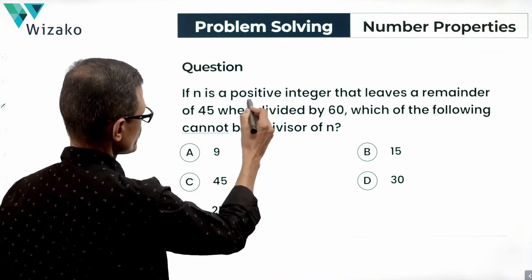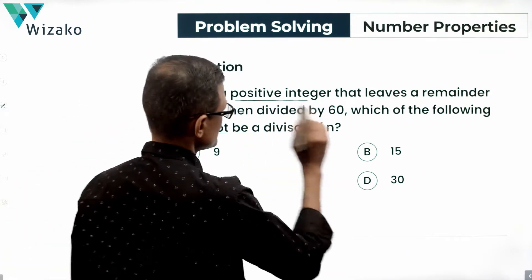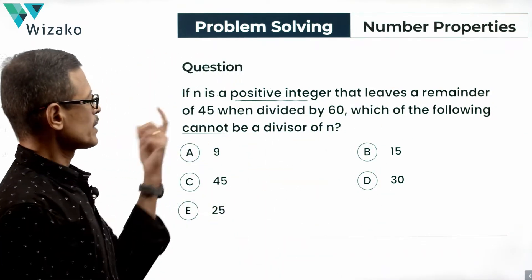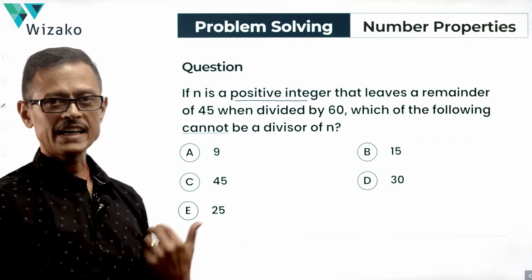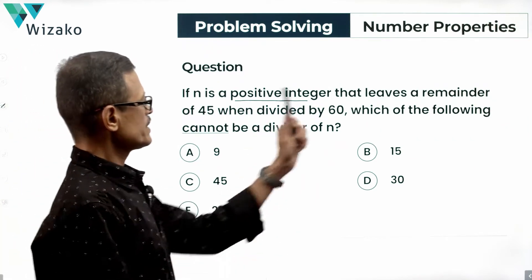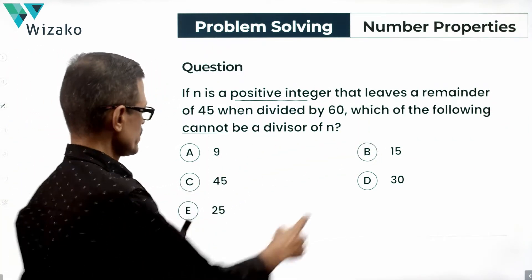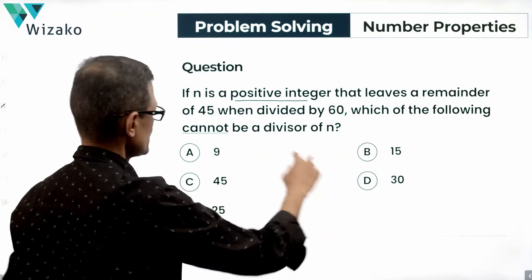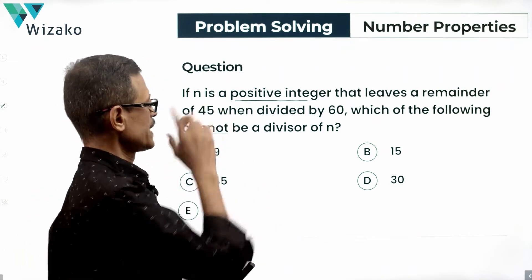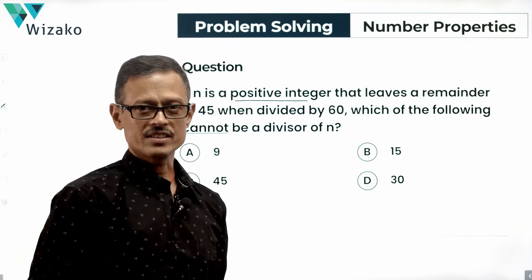If n is a positive integer that leaves a remainder of 45 when divided by 60, which of these numbers cannot be a divisor of n is what the question asks.